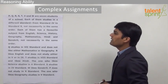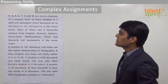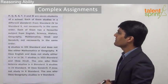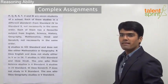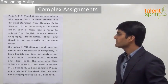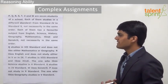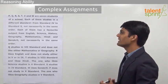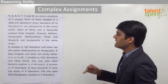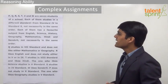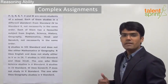The question here is: P, Q, R, S, T, V and W are 7 students of a school. Each of them studies in a different standard from standard 4 to standard 10, not necessarily in the same order. Each of them has a favorite subject from English, Science, History, Geography, Mathematics, Hindi and Sanskrit, not necessarily in the same order. So as we can see, there are 7 students, 7 standards from standard 4 to standard 10, and 7 different subjects.